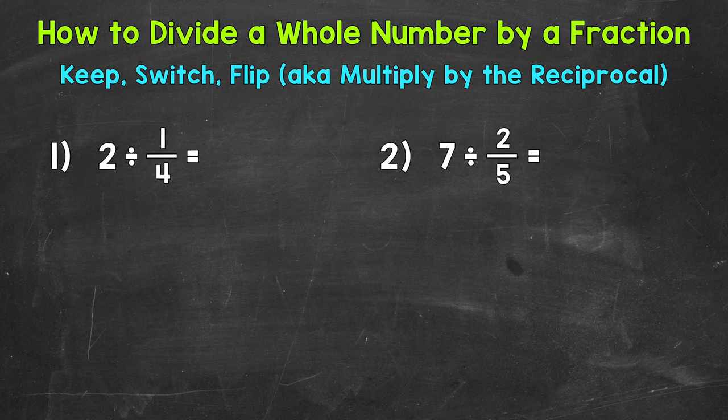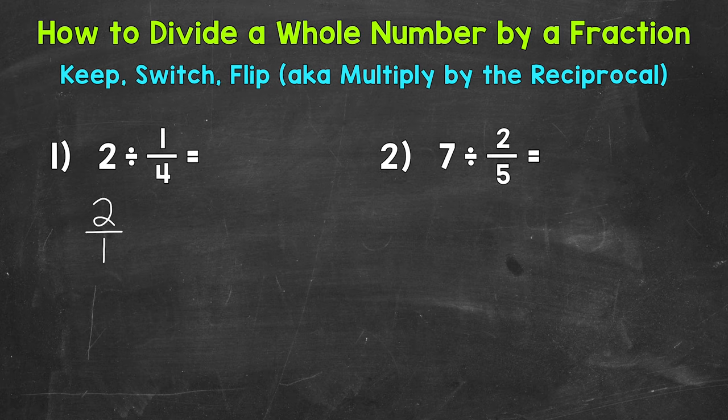Let's rewrite our problem using keep, switch, flip, also known as multiplying by the reciprocal. So we start with keep. We always keep the first number or fraction. In the case of number one, we have a whole two. So we need to keep that as two, but we're going to rewrite it as a fraction. Whenever you rewrite a whole number and put it in fractional form, all you need to do is put it over one.